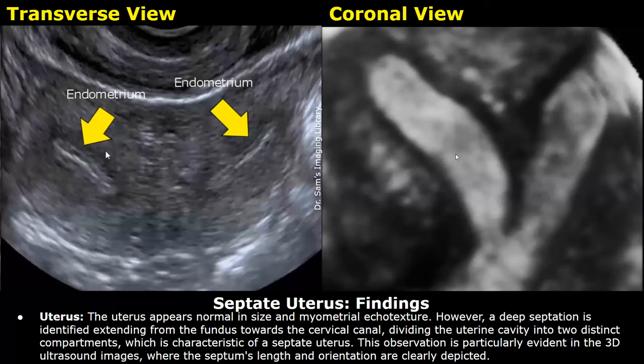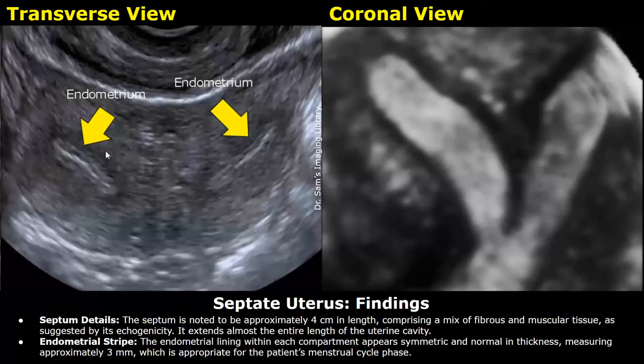This observation is particularly evident in the 3D ultrasound images, where the septum's length and orientation are clearly depicted. The septum is noted to be approximately 4 centimeters in length, comprising a mix of fibrous and muscular tissue as suggested by its echogenicity.